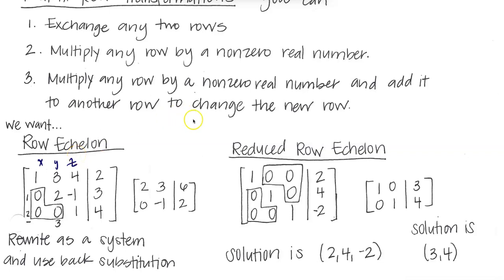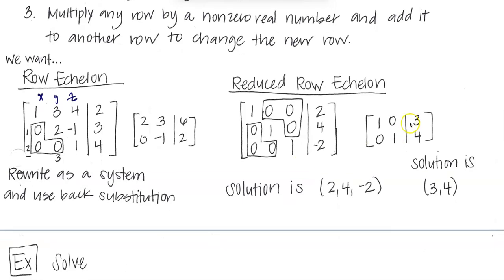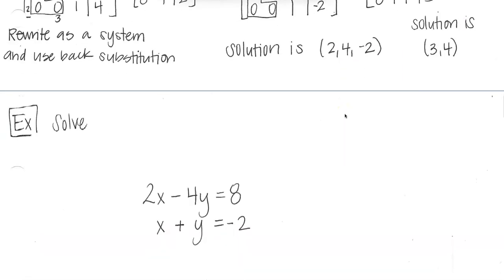Eventually we can go to reduced row echelon form, where we also have zeros above the leading entries. What's great about this is that you can read the answers directly: z equals negative 2, y equals 4, and x equals 1. On a 2 by 2, you'd similarly read off y equals 4 and x equals 3 immediately.